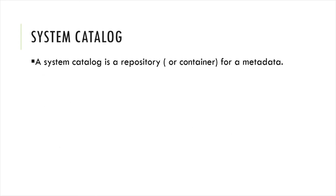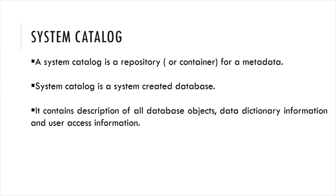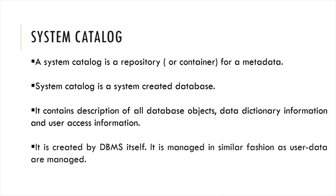The System Catalog is a repository or container for metadata — it is where metadata is stored. It is a system-created database that contains descriptions of all database objects, data dictionary information, and user access information. It is created by the DBMS itself and managed in a similar fashion to how user data is managed.